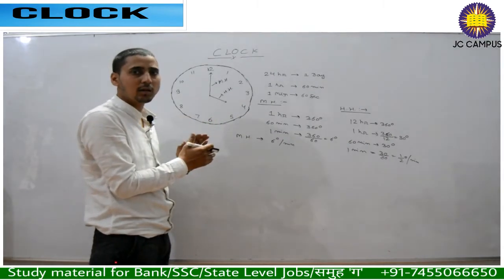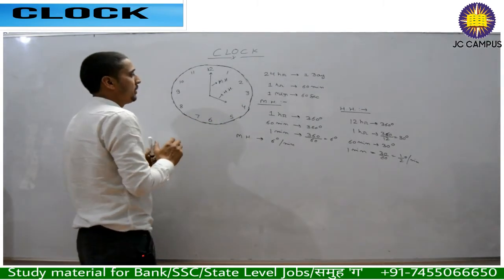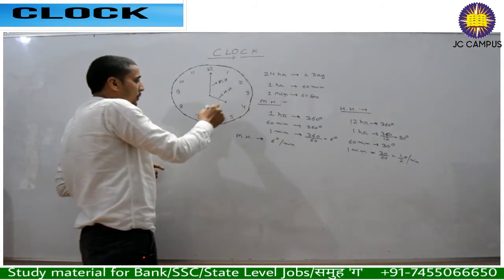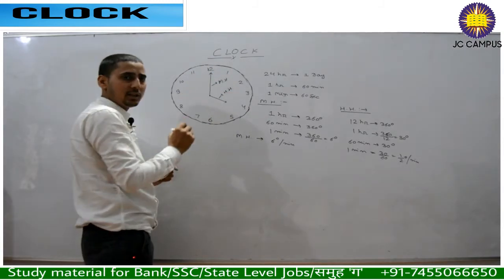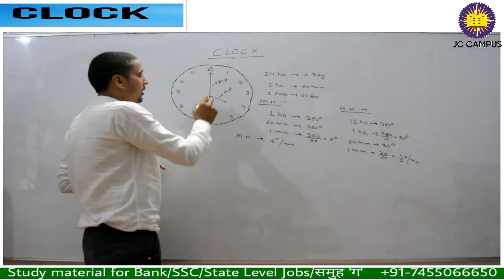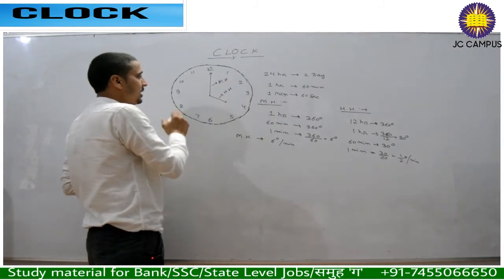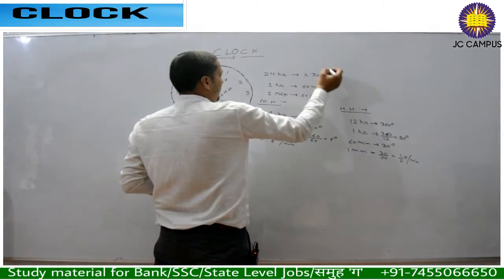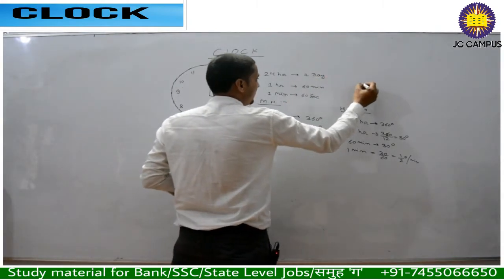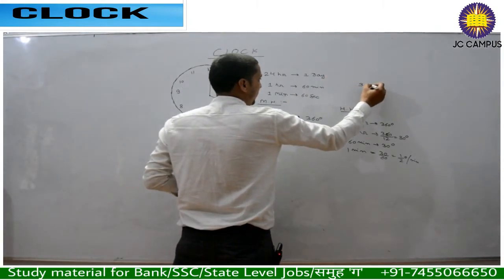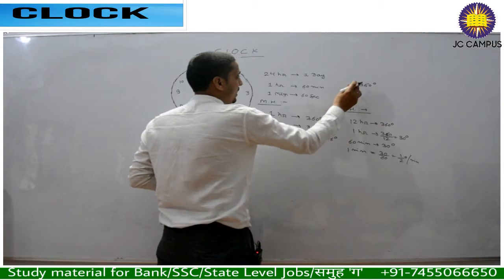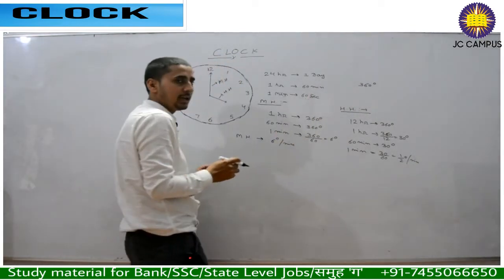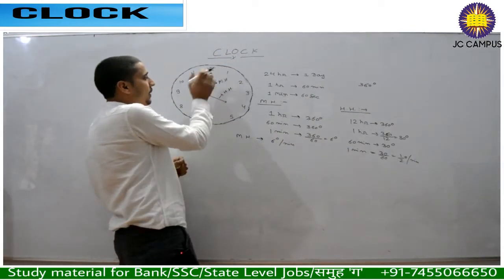One more thing: in a complete circle there are 360 degrees, and we divide this circle into 12 equal parts. So 360 divided by 12 gives each part a value of 30 degrees.